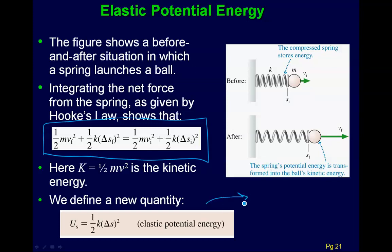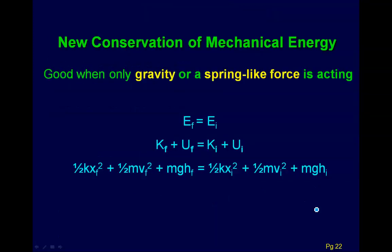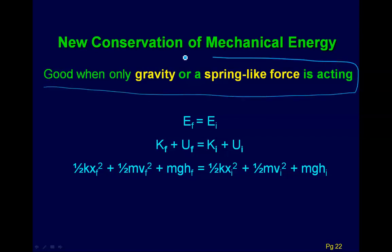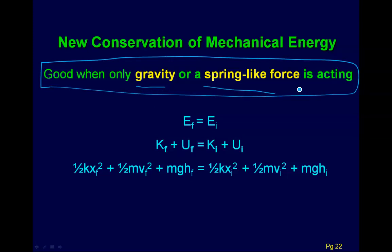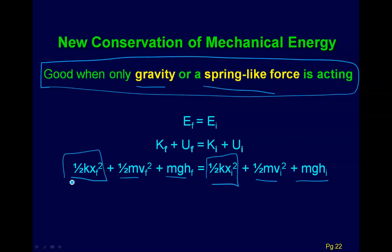From this derivation, we get the elastic potential energy of a spring: U_sp equals one-half k times x squared, where x is the distance the spring is perturbed from equilibrium. This is a new kind of potential energy — we now have gravitational and elastic (spring) potential energy. We can write a grand conservation of mechanical energy equation: the same kinetic and gravitational terms as before, now with the additional one-half kx squared spring term. This applies when the only forces acting are gravity or a spring-like force.